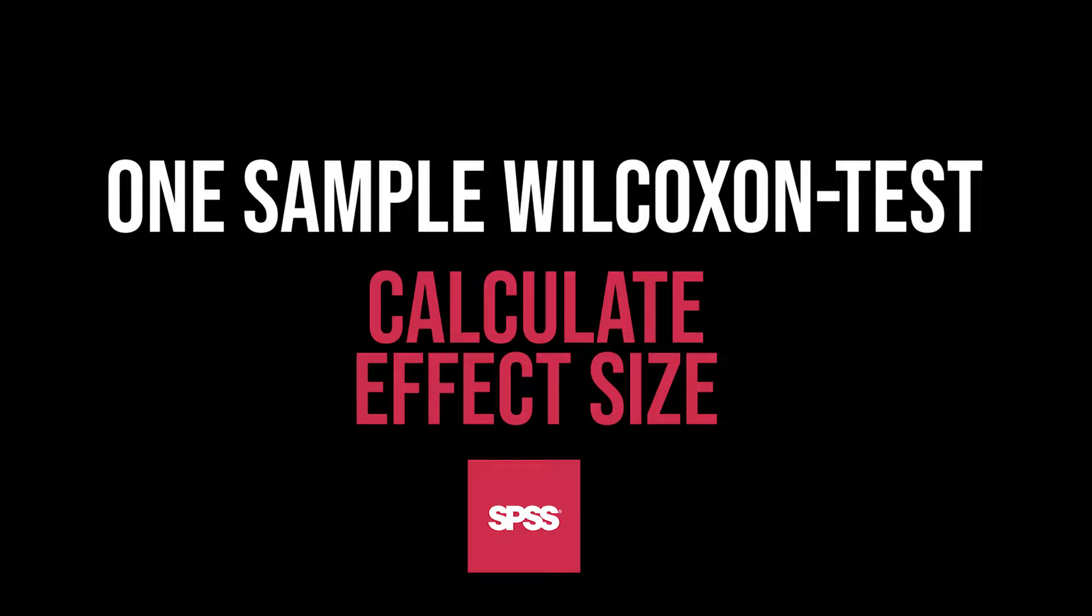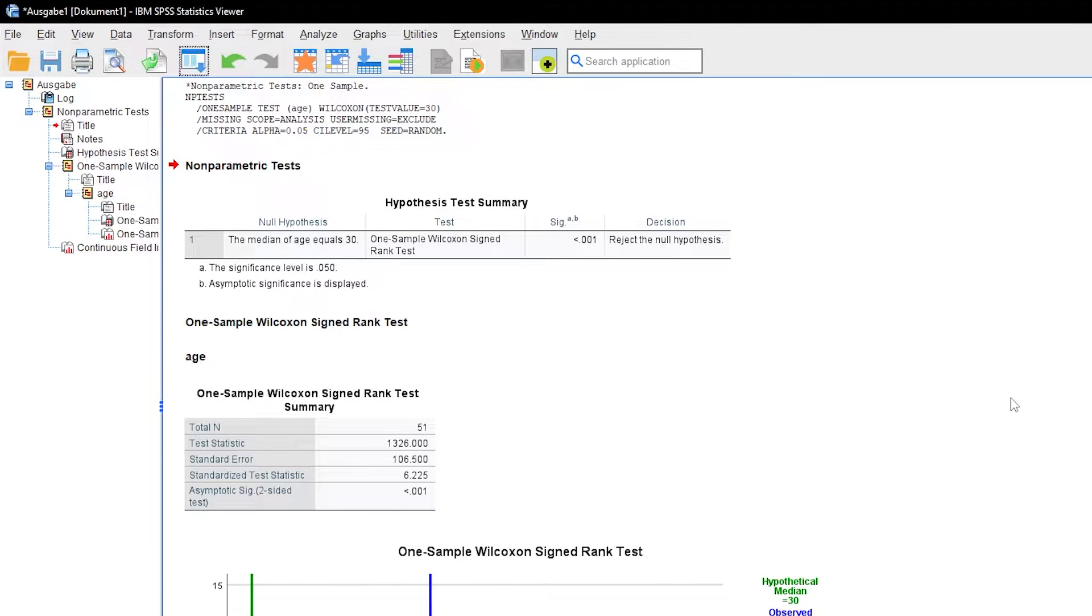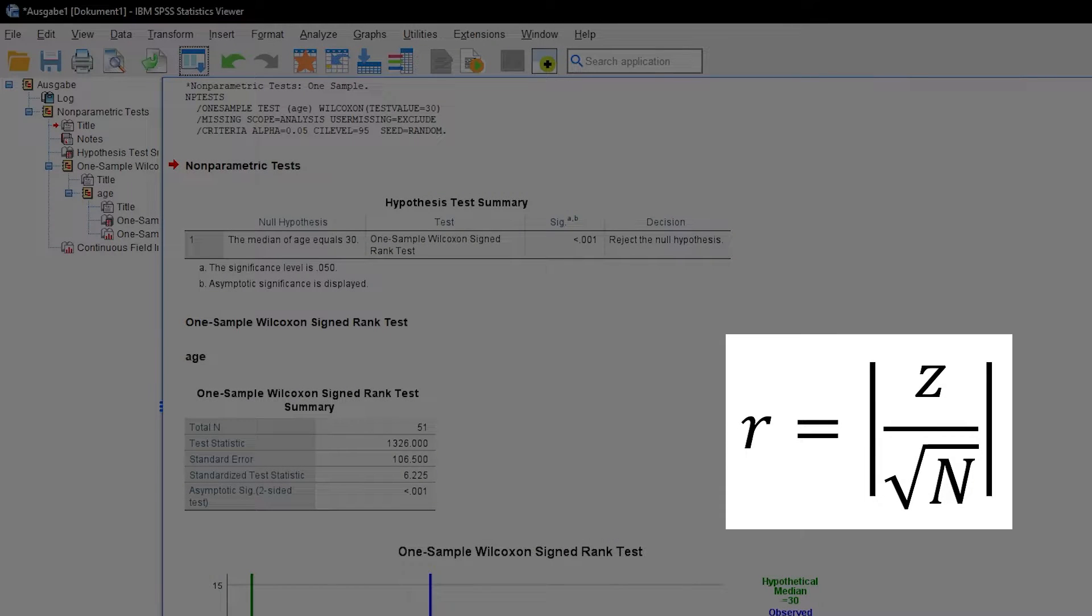This tutorial shows the calculation of the effect size following a significant one-sample Wilcoxon signed rank test in SPSS. Unfortunately, SPSS does not calculate an effect size for you. However, to calculate the effect size R, a simple division is sufficient.